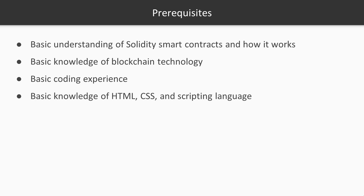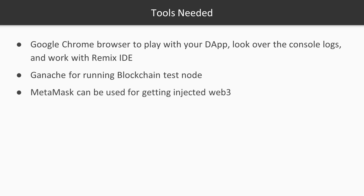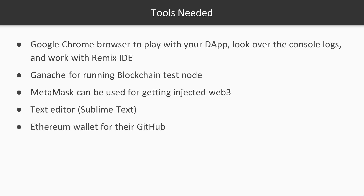We will also need a little bit of knowledge in HTML and CSS scripting language. The tools we will be needing are: Google Chrome browser, the Remix IDE — which we need to use on Google Chrome since we will be using MetaMask on it — Ganache for running a blockchain test node, MetaMask extension for injected Web3, any text editor (preferably Sublime Text), and an Ethereum wallet to actually deploy contracts. Let's get started!